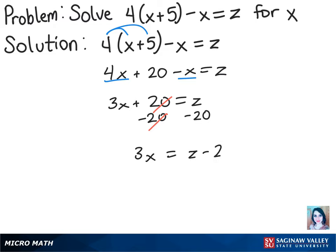And x still isn't by itself, but it will be if we divide both sides by 3. And then that will give us our final answer of x equals z minus 20 over 3.